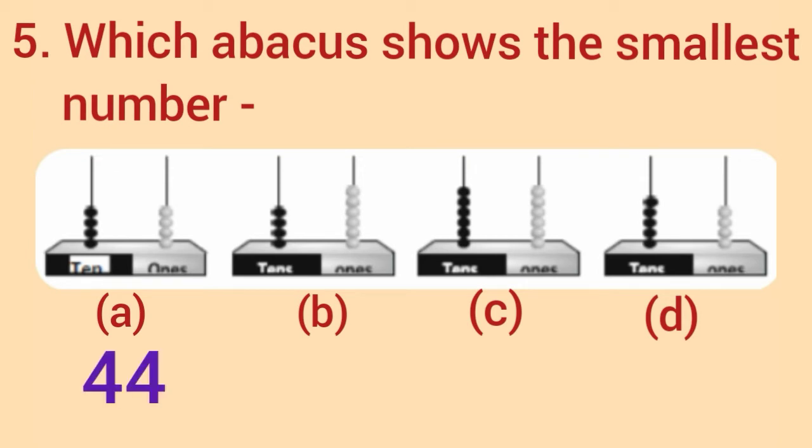Now, in Abacus B, there are 6 beads in one's rod and 4 beads in 10's rod. So, it shows the number 46.